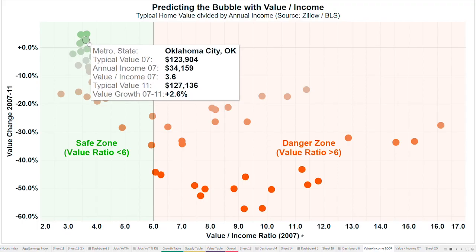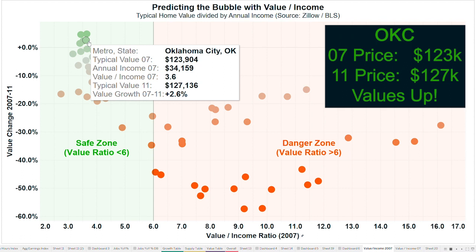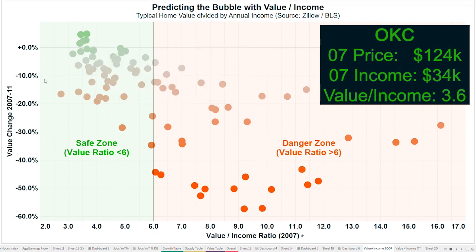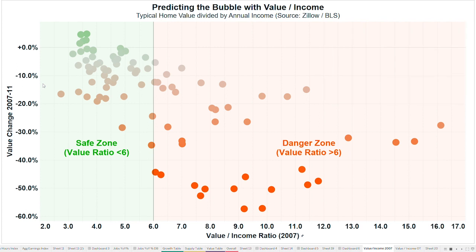Compare that to Oklahoma City. Back in 2007, Oklahoma City's typical home value was $124,000 and the average annual income for each worker was $34,000. That's a 3.6 value-to-income ratio. What happened in Oklahoma City over the next four years? Values actually went up. That's right — Oklahoma City saw appreciation during the biggest financial housing crash of all time from 2007 to 2011. This shows you the power of value-to-income ratio in predicting the resiliency of markets during a housing downturn.